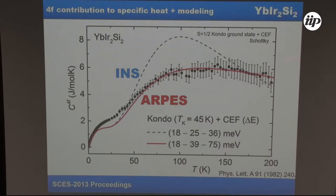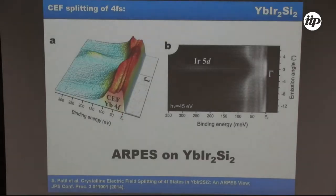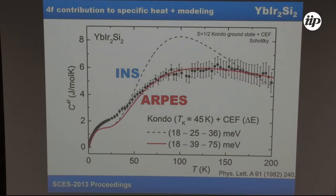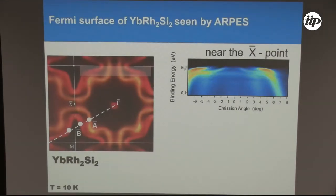Here you can see a fit of specific heat data taken by neutron scattering using an energy scheme derived from neutron measurements. The problem was that the energy resolution of the neutron beam was around 55 meV, so the determination of a term around 36 meV that was claimed was not fully correct. If you look at the ARPES data, you can clearly see a feature at 75 meV with strong dispersion near the gamma point. If you put the 75 meV peak into the model, you see nice agreement with the fit; however, at low temperatures both curves show strong deviation, which one may argue is because the hybridization phenomena — rather strong here — are not included in this simplified model.